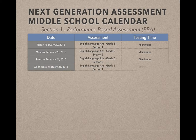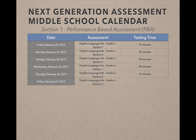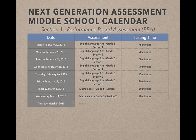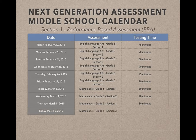We'll see the same structure for Grade 6: Wednesday February 25th, Thursday February 26th, and Friday February 27th will be Grade 6 Sections 1, 2, and 3 of English Language Arts. Coming back from the weekend, on Tuesday March 3rd we'll do Mathematics Grade 6 Section 1. Wednesday March 4th will be Grade 6 Section 2 of Math. And then the same for Grade 5 on Thursday March 5th and Friday March 6th.